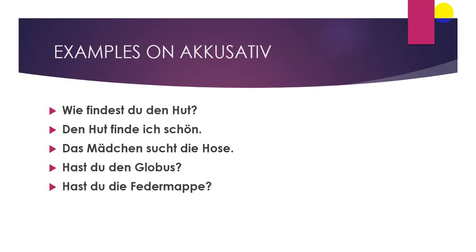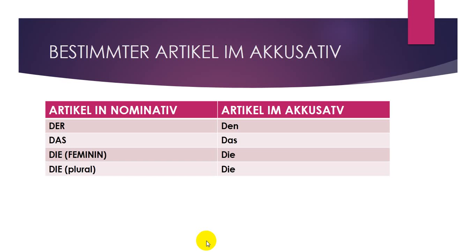Now let's look at the examples of the accusative and the changes that happen to the articles in the accusative case. The articles are: 'der,' 'das,' 'die,' and 'die.' In the nominative, 'der' turns to 'den' in the accusative. 'Das' stays 'das.' 'Die' for feminine stays 'die,' and 'die' in the plural form also stays 'die.' So the only change happens to the masculine: 'der' becomes 'den.'